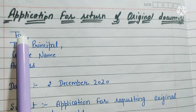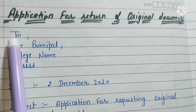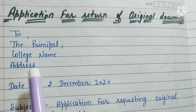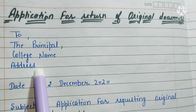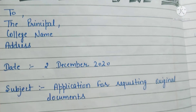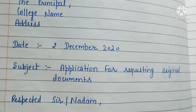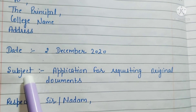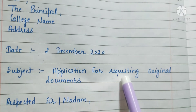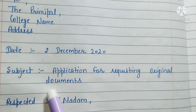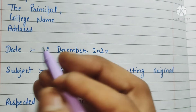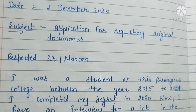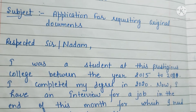So firstly we have to write 'To, The Principal', then you have to write your college name and the address. Then you have to add the date, like 2nd December 2020. Then you have to write the subject, like 'Application for requesting the original documents.' Then you have to write the salutations like 'Respected Sir or Ma'am.'